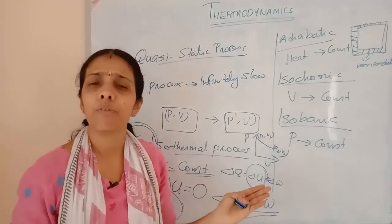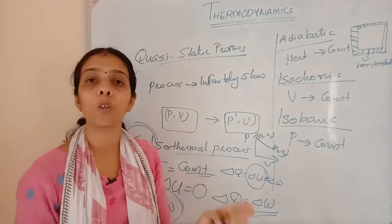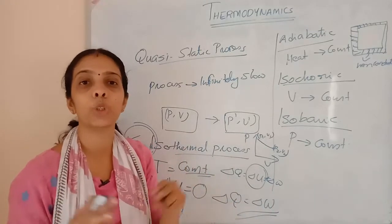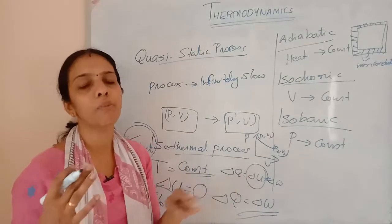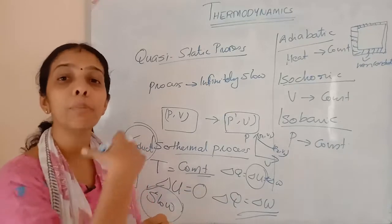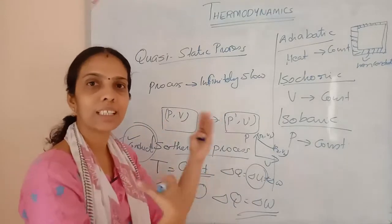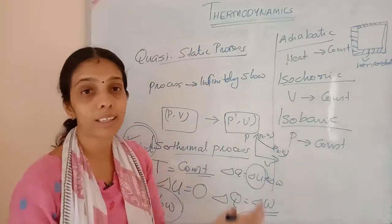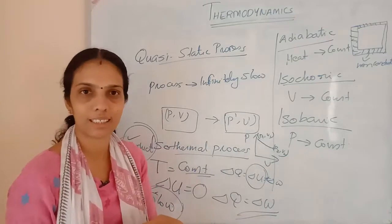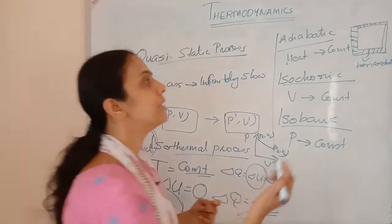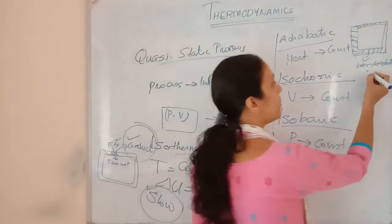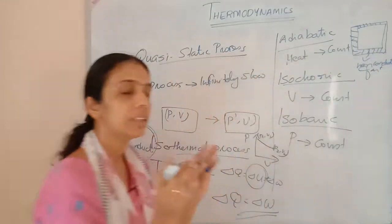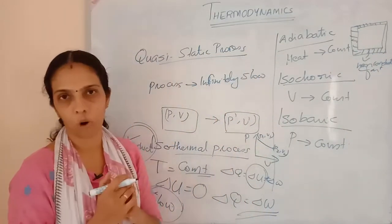The adiabatic process should also be a very fast process. Expansion or compression should happen very quickly. Then the temperature will vary inside, but heat energy is neither released nor absorbed. So it must be a fast process with non-conducting walls.